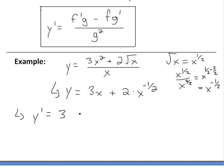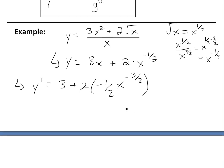Then for the derivative of 2 times x to the negative one-half using the power rule, we bring down the negative one-half: so we get plus 2 times negative one-half times x to the power of negative one-half minus one, which is negative three-halves. The 2 and the one-half cancel, so we're left with y prime equals 3 minus x to the negative three-halves. This is our answer.